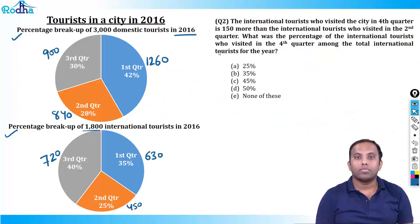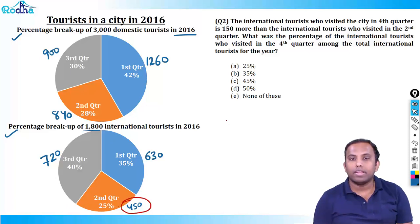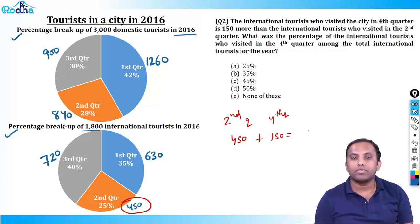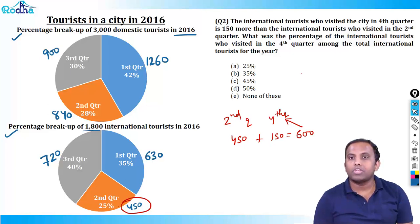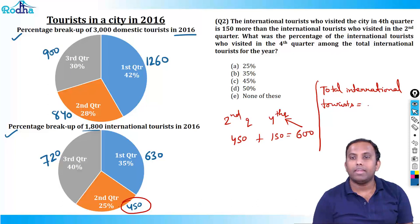Question two: the international tourists who visited the city in the fourth quarter is 150 more than the international tourists who visited in the second quarter. Second quarter had 450 people, so fourth quarter is 450 plus 150 equals 600. Now, 600 people visited in the fourth quarter. What percentage of total international tourists visited in the fourth quarter? Total is 1800 for three quarters plus 600 for fourth quarter, giving 2400 total.